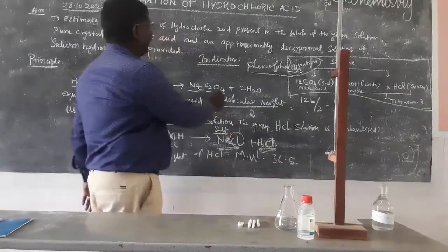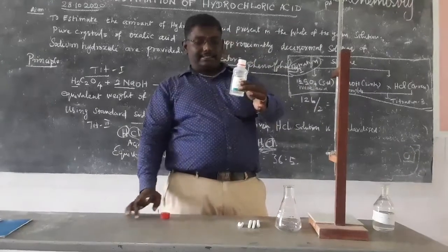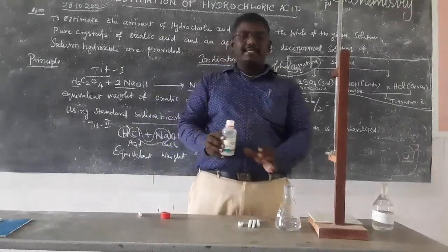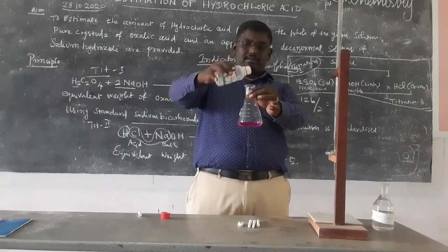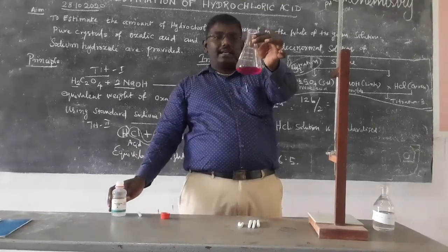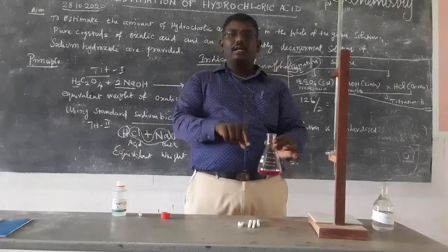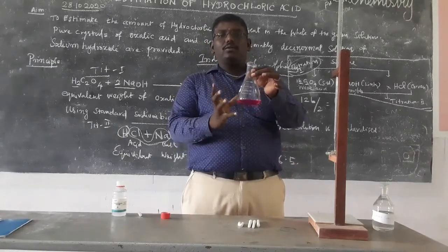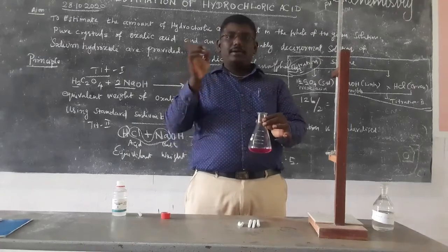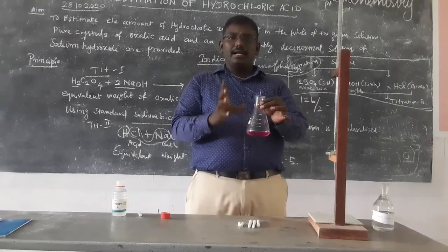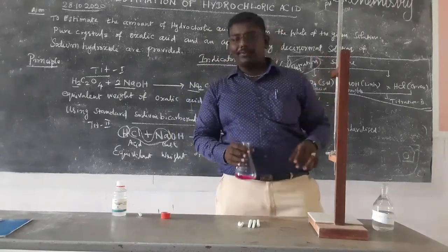The indicator used is phenolphthalein, which is colorless in acid. In a base, a pink color appears. The indicator is colorless in acid; as the acid is titrated, the pink color will disappear. The end point is when the pink color disappears and the solution becomes colorless, indicating neutralization. This is the first titration end point.